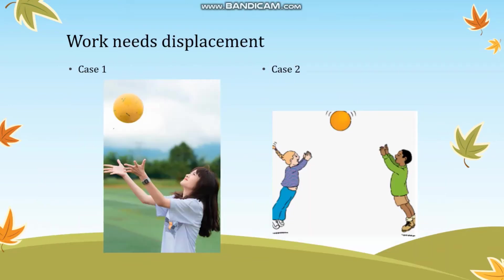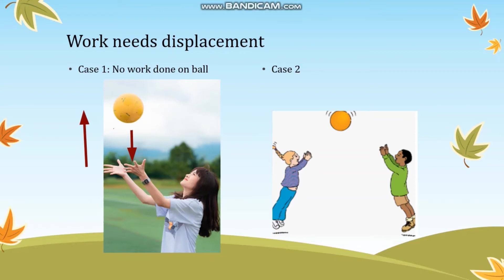Let us take two more examples. In the first case, we see a girl who is playing with the ball. She has thrown the ball up and the ball will come down back to her hands. If the ball comes down to exactly the same position, do you think work is done? Work is not done in this case. The total work done on the ball when it goes up and comes back down is zero, because the displacement of the ball — that is, the change in position — is zero.